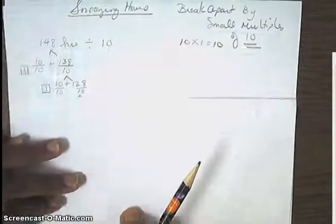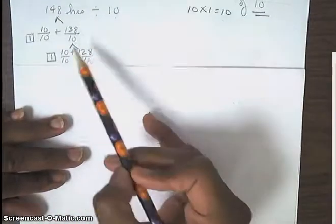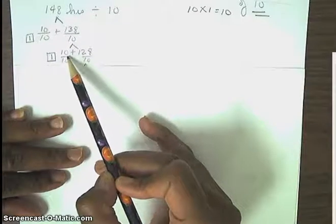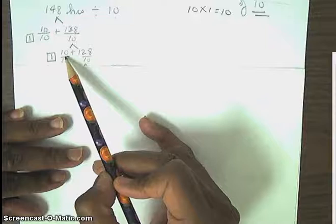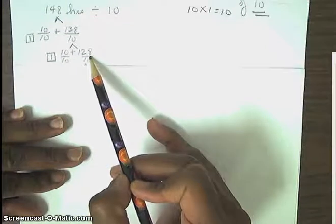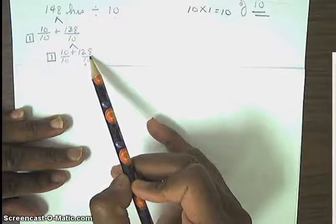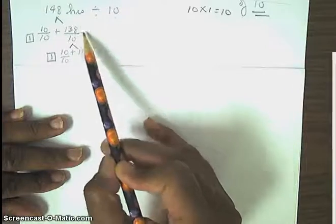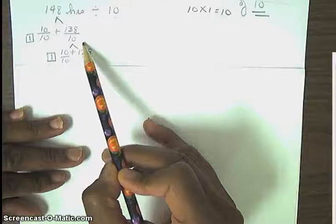In order to make this equivalent, this statement, 148 hours divided by 10 equivalent to what we have broken apart, it has to equal the number that I'm pointing to, which is 148. So 10 plus 138 is equal to 148. And we have 148 hours divided by 10 is the same thing as saying 10 plus 138 divided by 10. So that's your first group because 10 divided by 10 is 1. But you still have all of this to break apart. So this is where the repeated subtraction come into play. The next step is to take 10 groups again from 138. So now we have 138 broken out or taking away, 10 groups. So you have to add 128. So you have 10 divided by 10 plus 128 divided by 10.